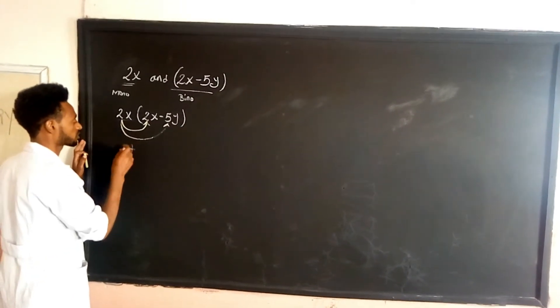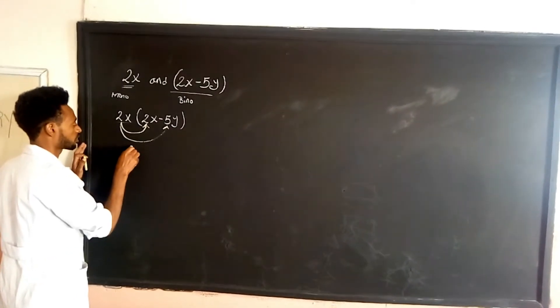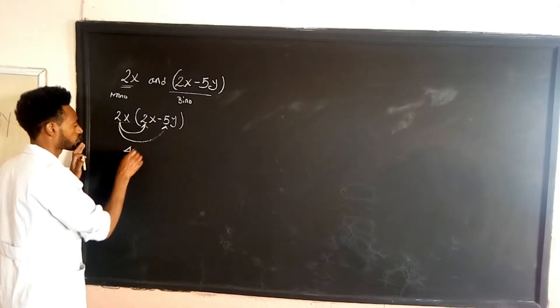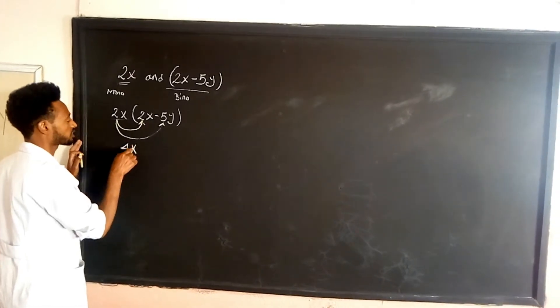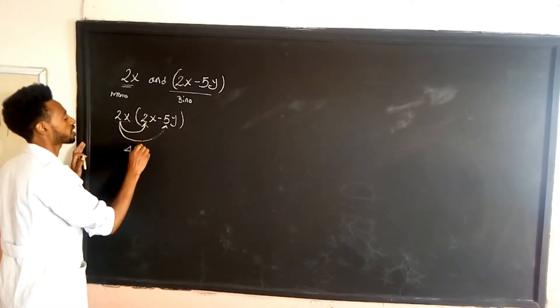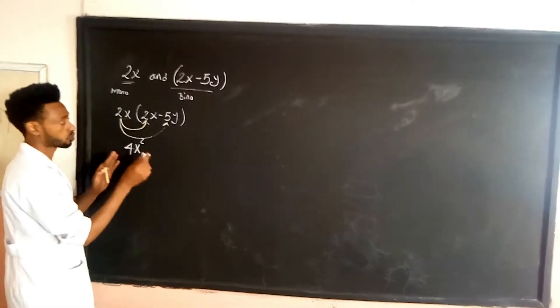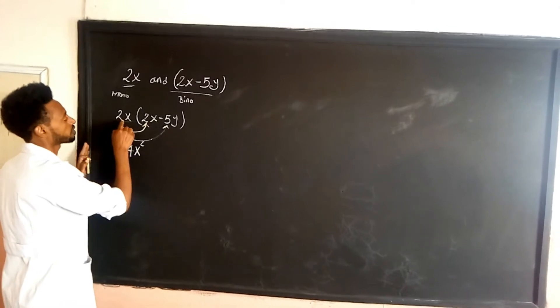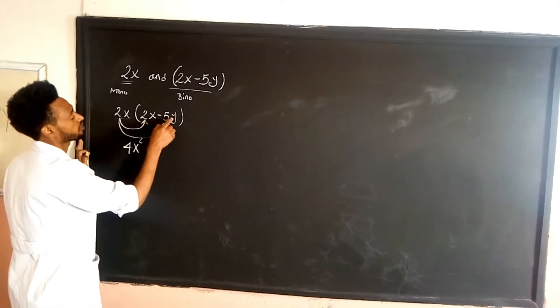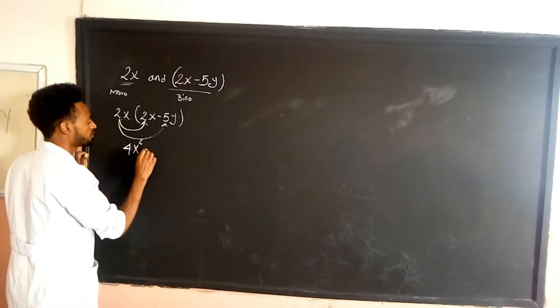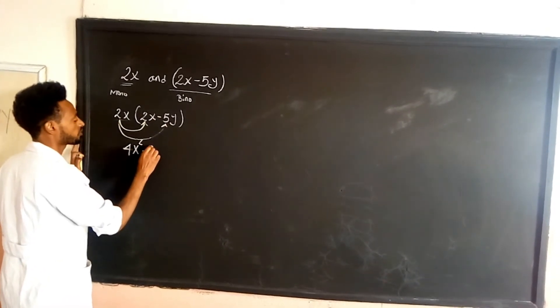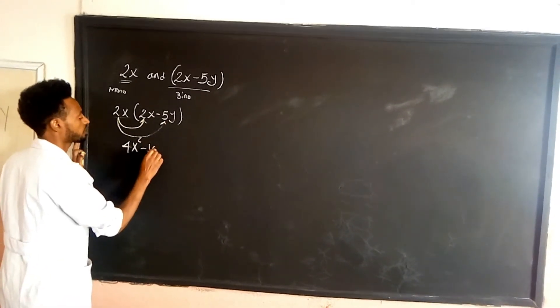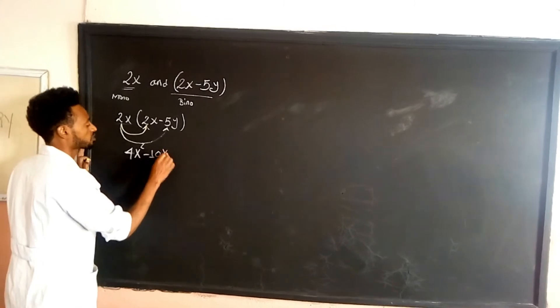4x. Then x times x gives x squared. And 2x times negative 5y gives negative 10xy.